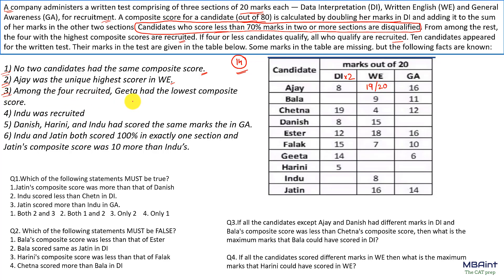The third point says among the four recruited, Geeta had the lowest composite score — so Geeta would be recruited with the lowest composite score. The fourth point says Indoo was recruited. Since Indoo has to be recruited, Indoo must score more than 14 marks in each section, because scoring less than 14 would mean disqualification.